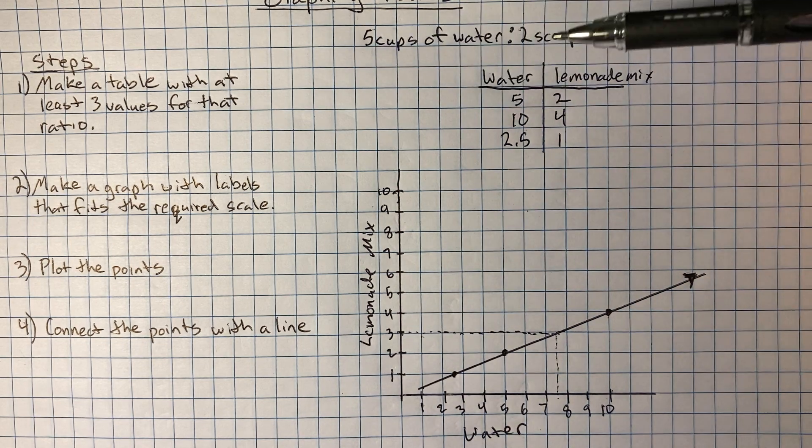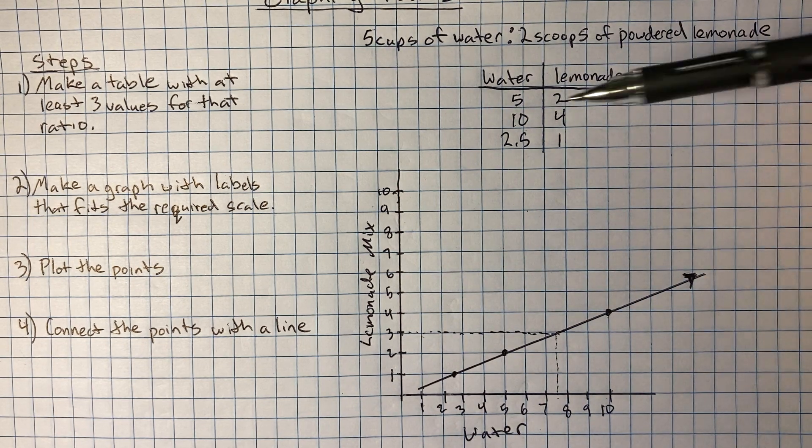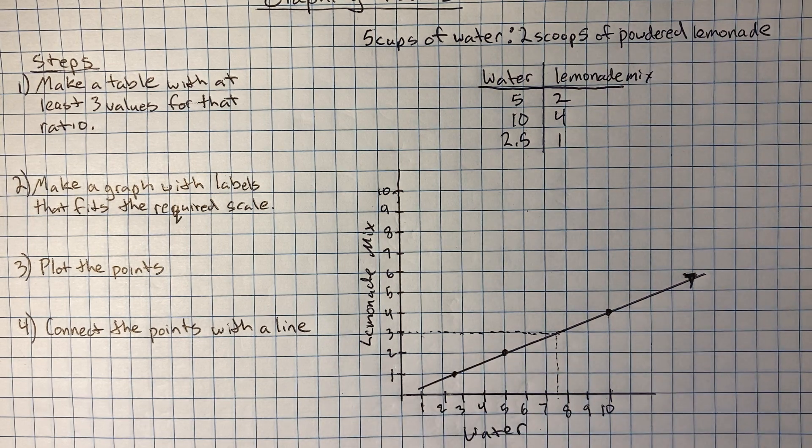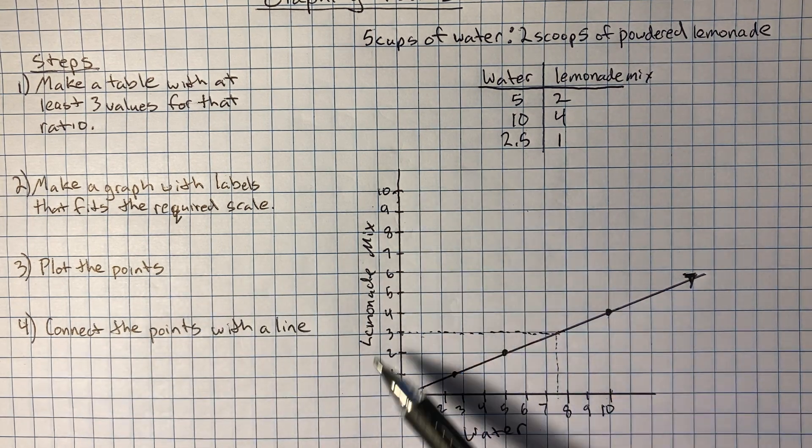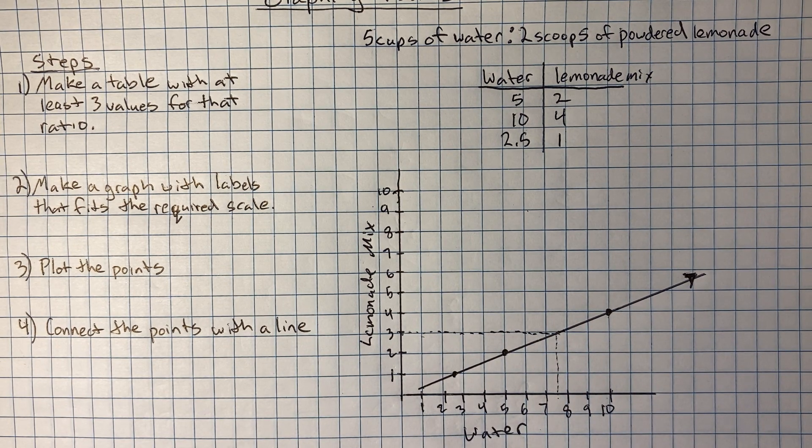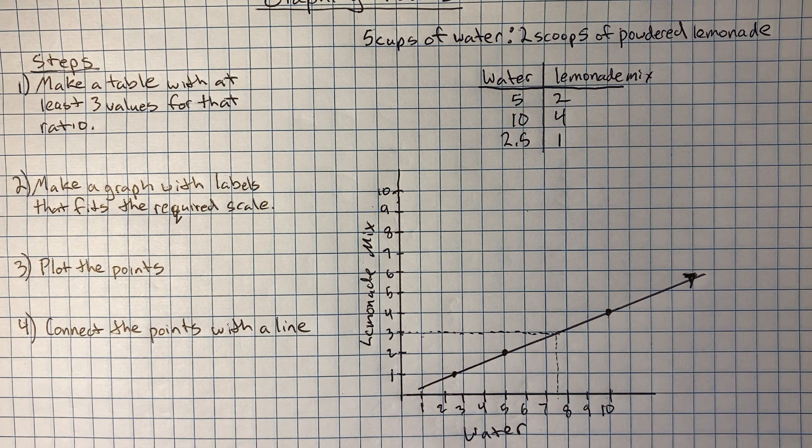So all we got to do, we start with our ratio. We come up with a couple of values, at least three. So that's going to give you that line. And then make sure your scale fits, plot those points, connect the line or connect the dots. And that's all there is to it.